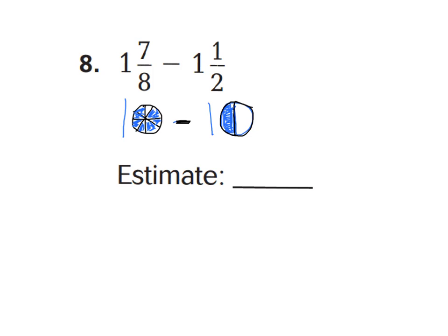Let's go ahead and look at number eight. I went ahead and drew the model to show one-whole and seven-eighths shaded in, and one-and-a-half shaded in. We can see that seven-eighths is almost shaded in to be one-whole, because there's just one-eighth that still needs to be shaded in to show one-whole. So I'm going to estimate seven-eighths to be about one-whole. So one-whole plus one-whole is two-wholes — I'm just going to call this two.